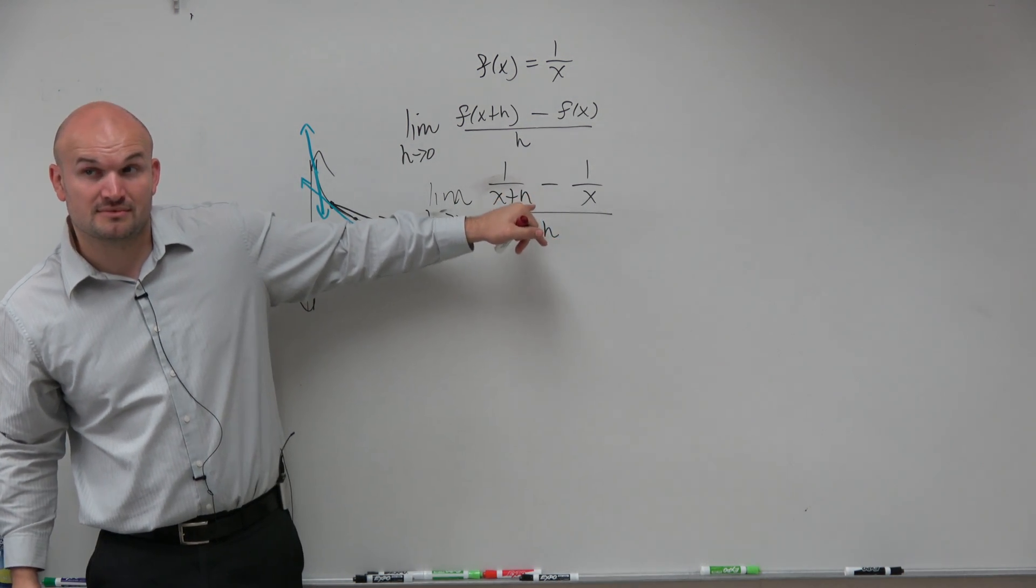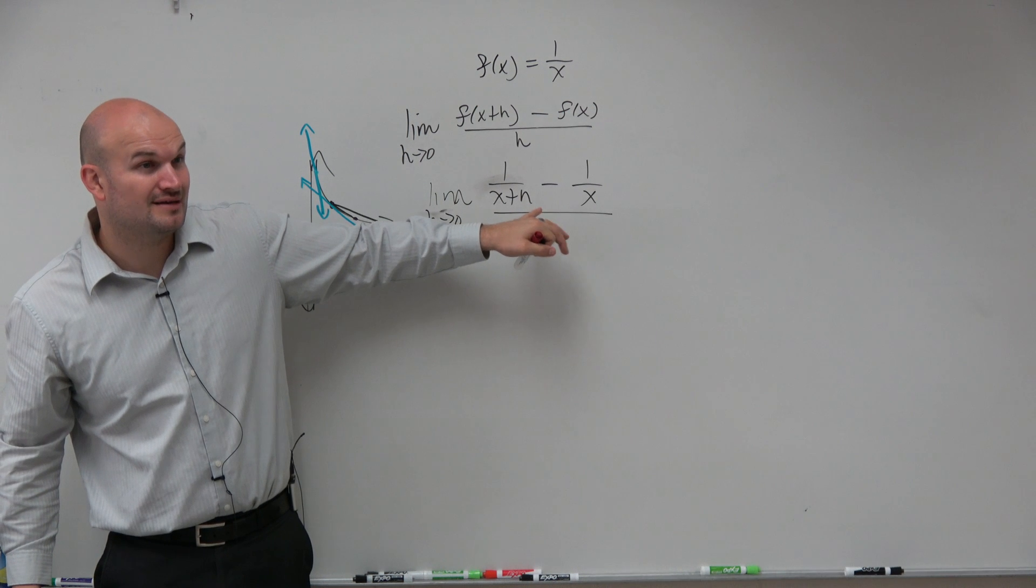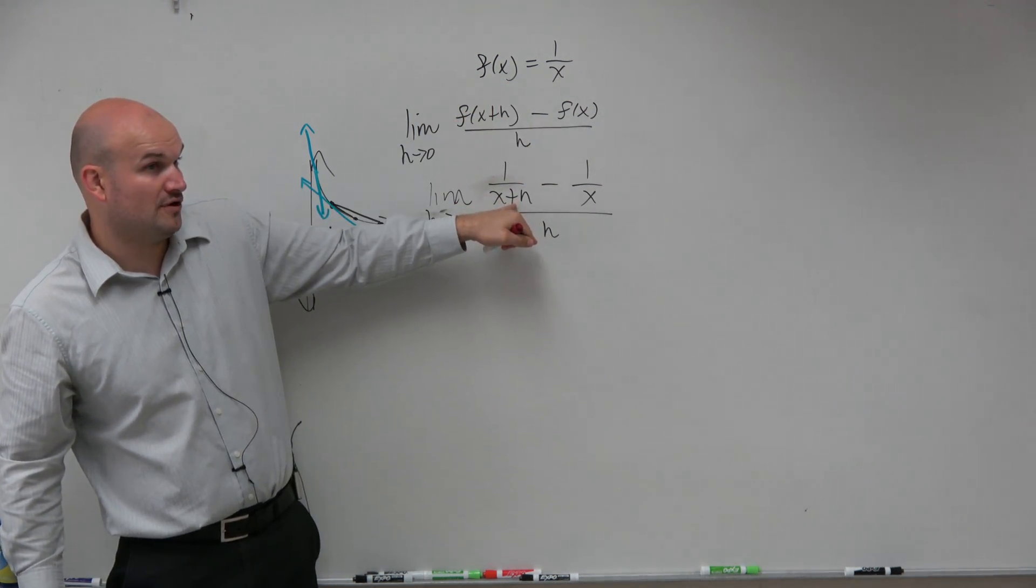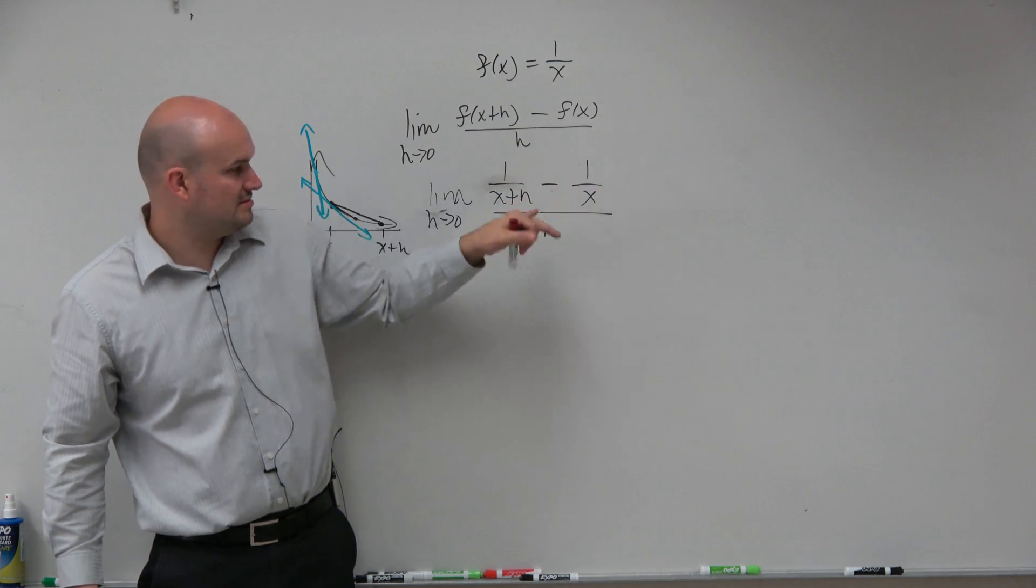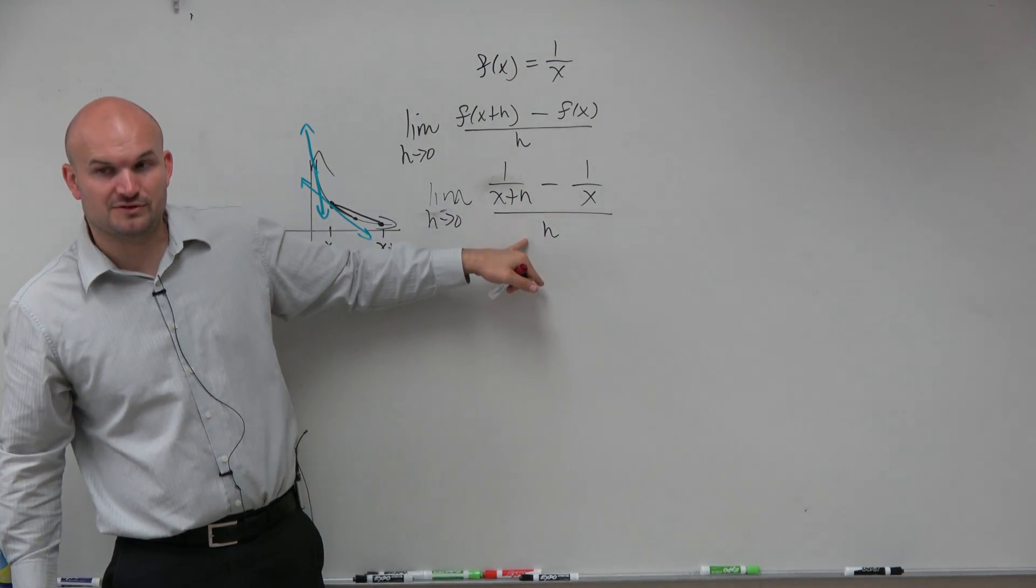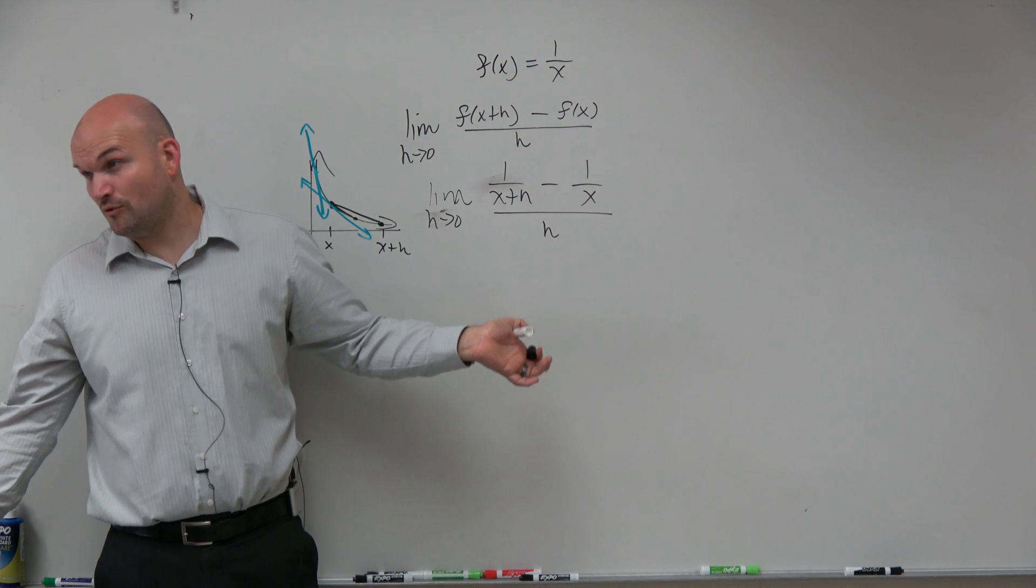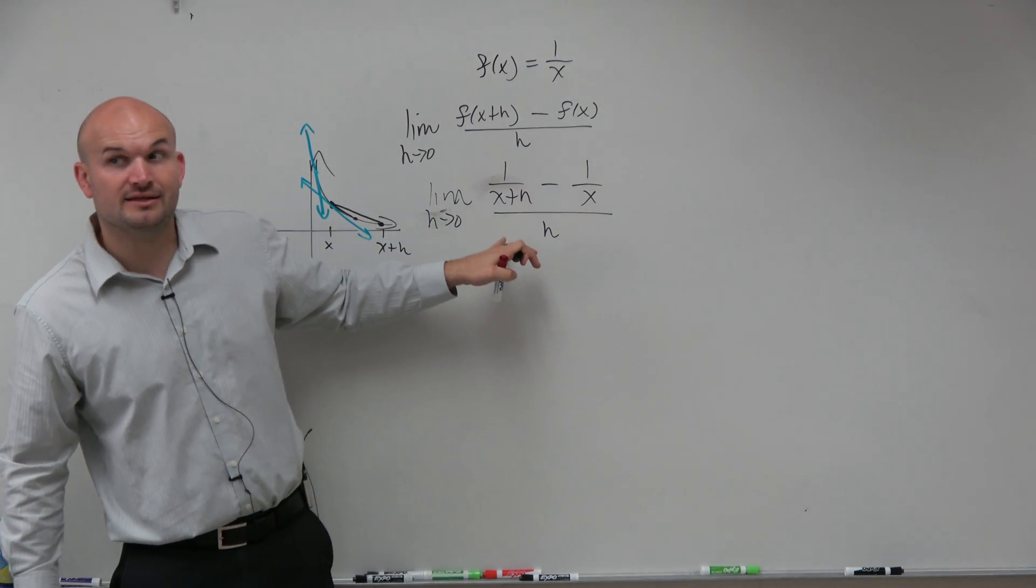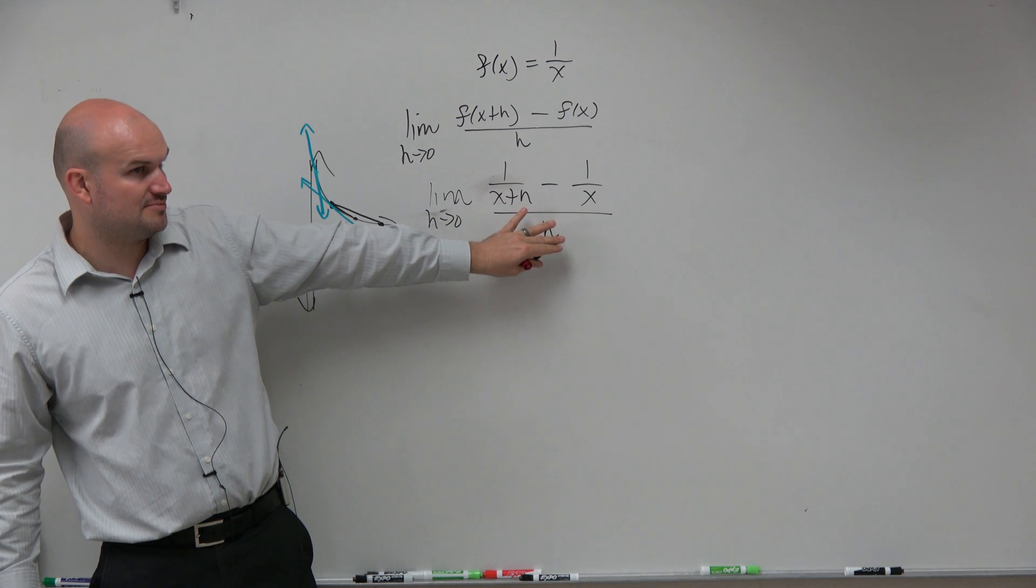Now, we have this. And everybody should be able to get to this point. Everybody should be able to get to this point. All you're doing is plugging in x plus h in for x, subtracting f of x, and then dividing by h, which is part of the difference quotient. Now, where people will make mistakes is the algebra, which is okay. But understanding the difference quotient, everybody should at least get to this point.